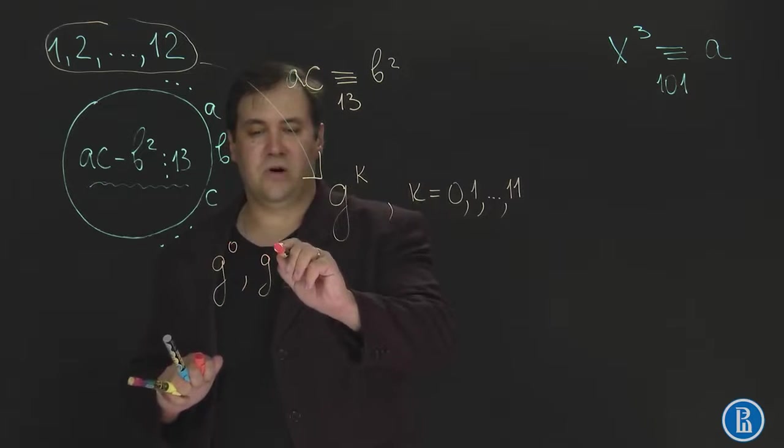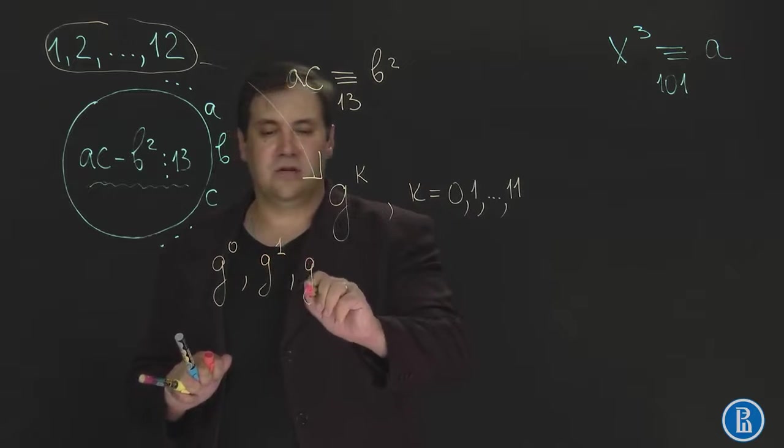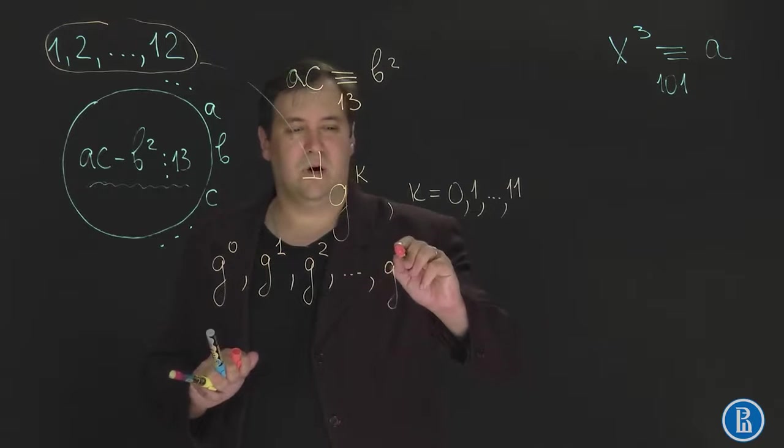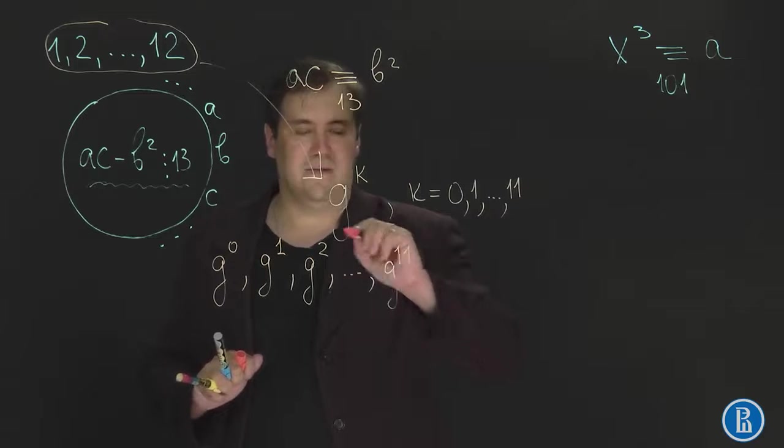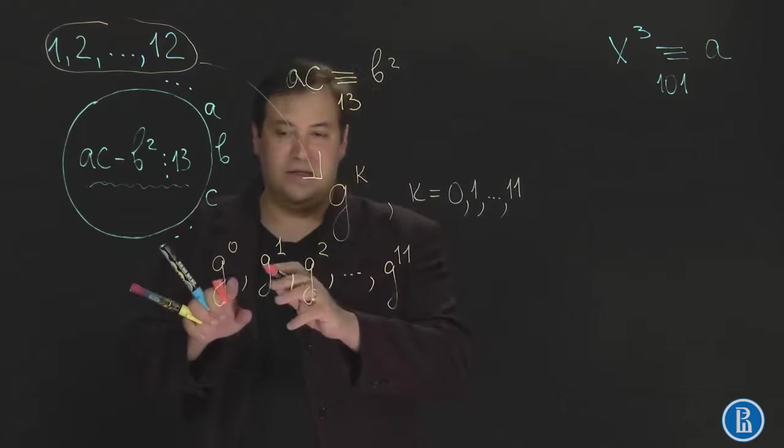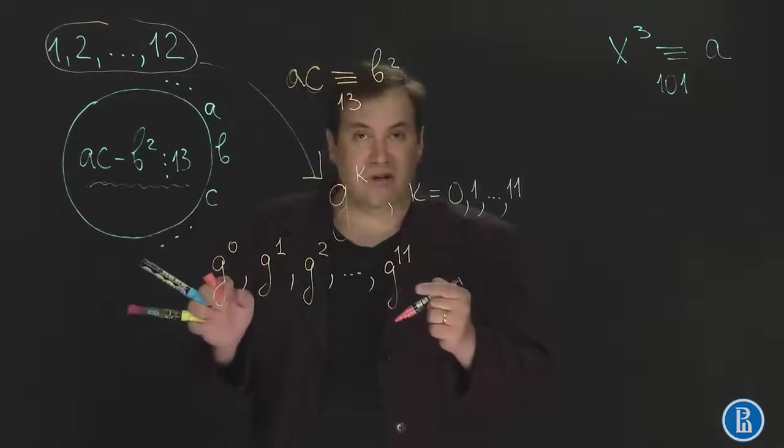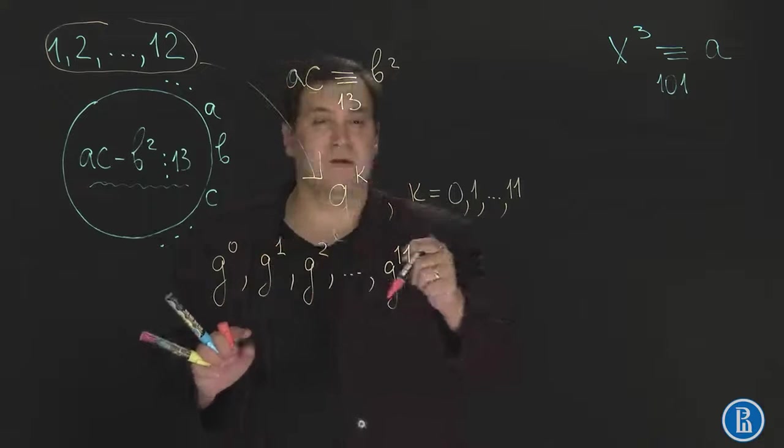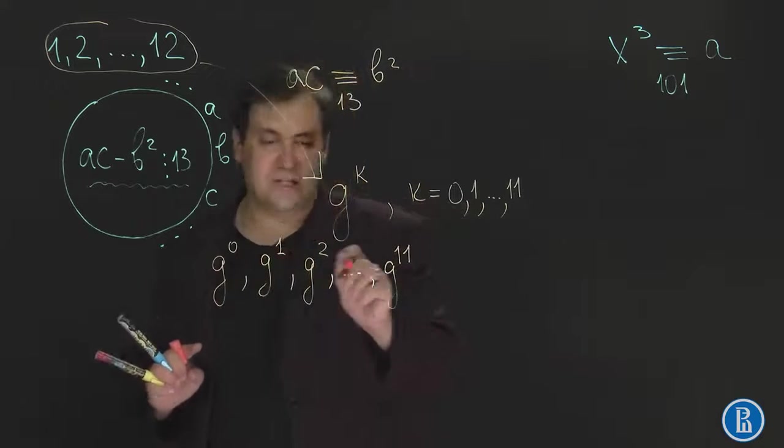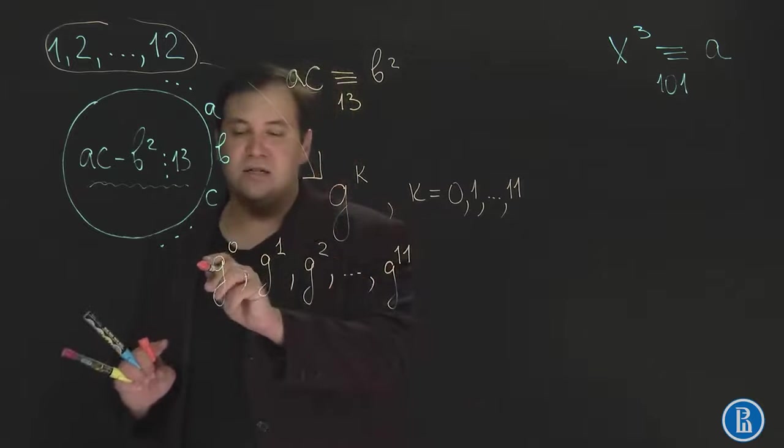So simply arrange g to the power 0, g to the power 1, g to the power 2, through g to the power 11. You may notice that this is a geometric progression and powers form an arithmetic progression. But you may notice that this geometric progression is actually circle-wise.